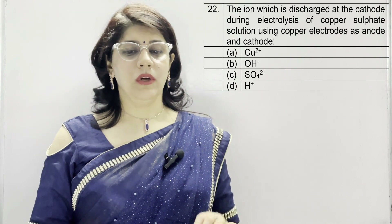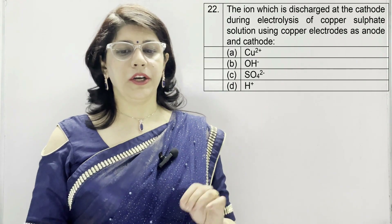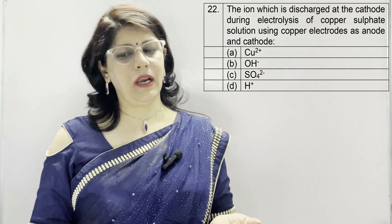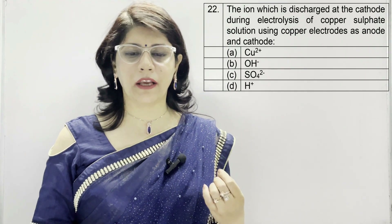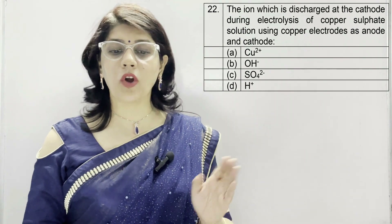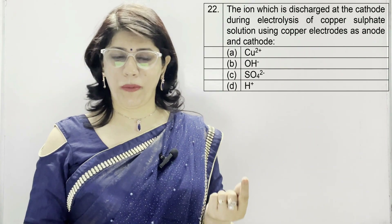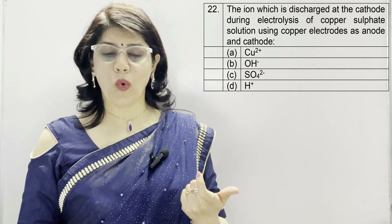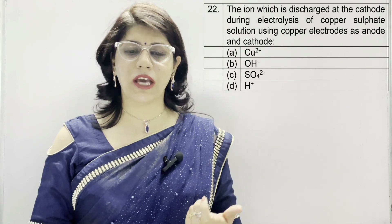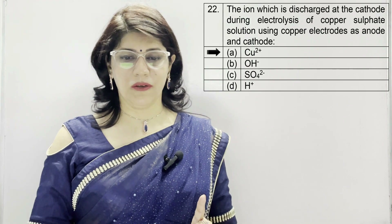Question number 22: the ion which is discharged at the cathode during electrolysis of copper sulfate solution using copper electrodes as anode and cathode — which ion is a metal? Option A: copper(2+), B: OH minus hydroxide, C: sulfate, D: H plus. The correct option is copper Cu(2+).